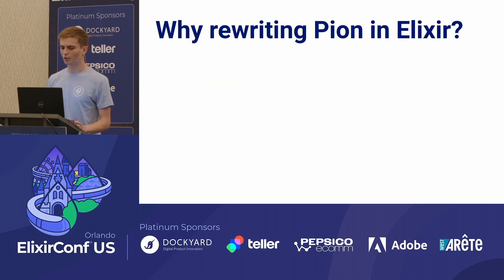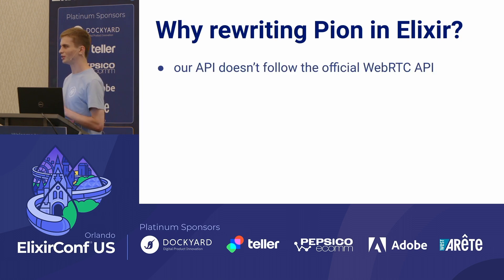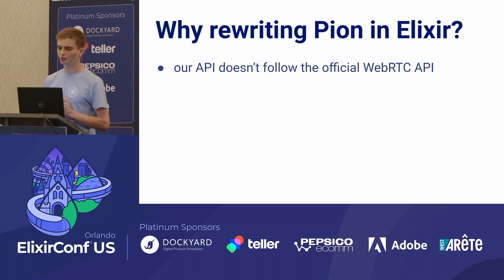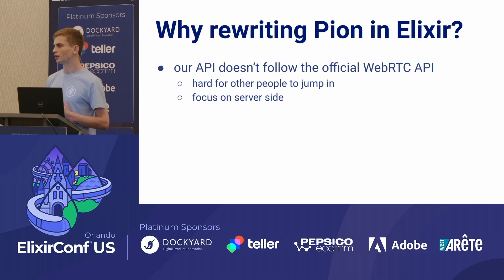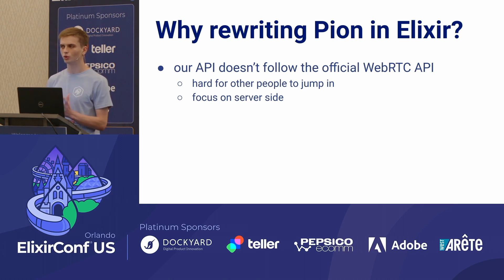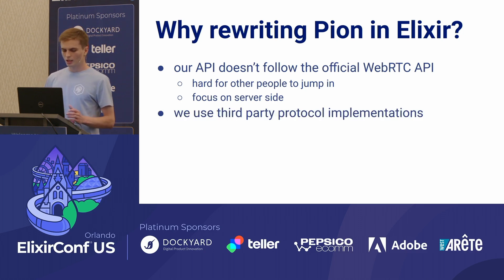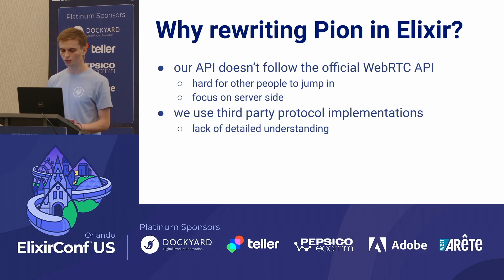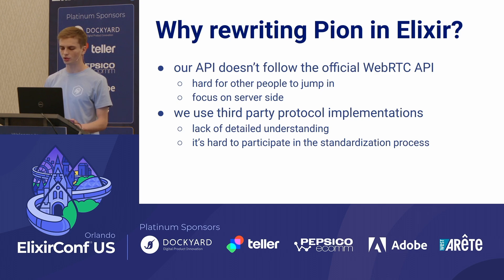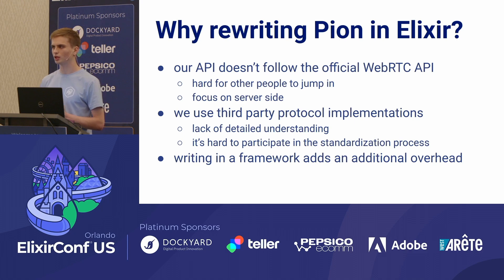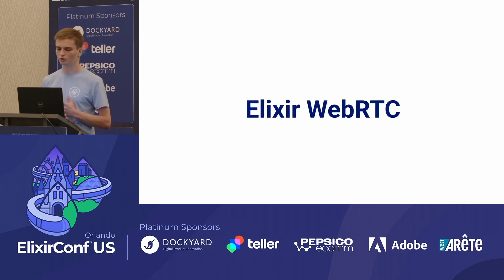So why did we decide to rewrite Pion in Elixir? We already have a WebRTC implementation in Membrane, but it has a couple of drawbacks. First, our API doesn't really follow the official WebRTC API, making it hard for people familiar with WebRTC in other languages to jump into our project. We are focused on the server side — specifically the controlled side. We use third-party protocol implementations, which results in sometimes lacking detailed understanding of what is going on under the hood, and it's also hard to participate in the standardization process. And writing in a framework adds overhead, so we have to think about framework code as well as WebRTC code. Because of that, we decided to create a new project called Elixir WebRTC.